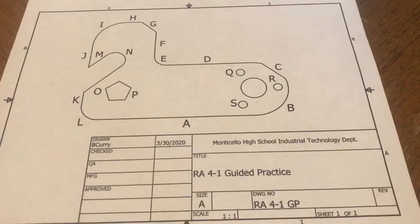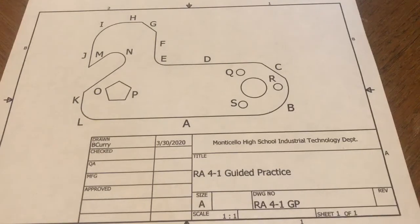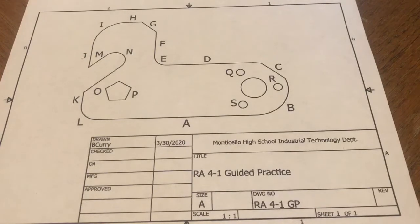We're starting today with this review activity — a guided practice on this two-dimensional drawing — and we're going to be talking about the geometric relationships on our part. Because we have to look at these relationships and maintain them when making the part, this is where your real-world geometry and math from geometry class applies to what we make out on the shop floor. Looking at your guided practice worksheet, you've been given a sheet with questions and a drawing.